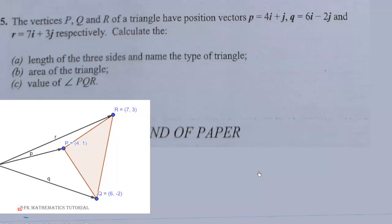This is the triangle. We have the origin here, then we have the position vectors, and we have the vertices of this triangle over here. And we are asked to find the length of the three sides and name the type of triangle. So, we need to find the vectors PR, PQ, and QR. So, vector PQ equals position vector OQ minus OP.